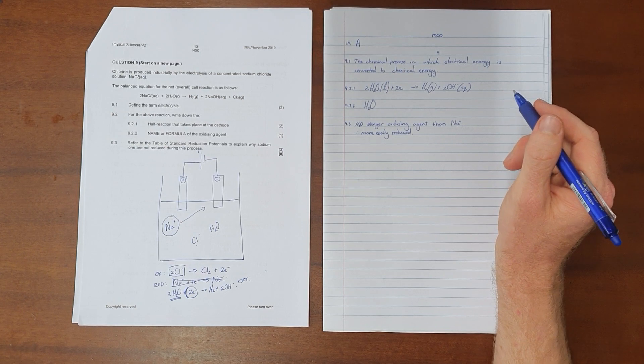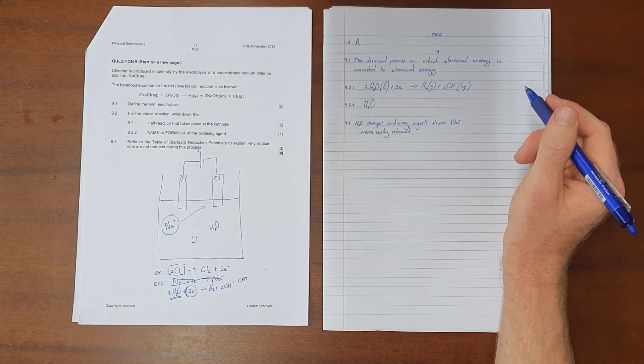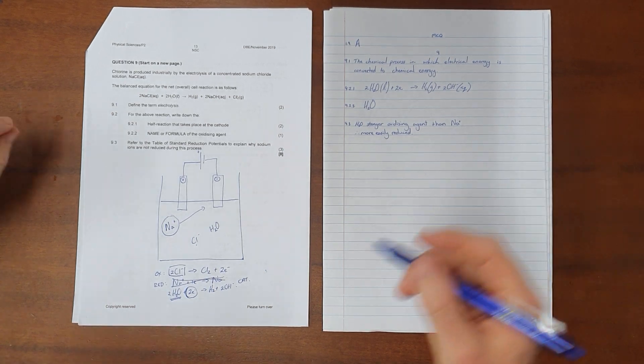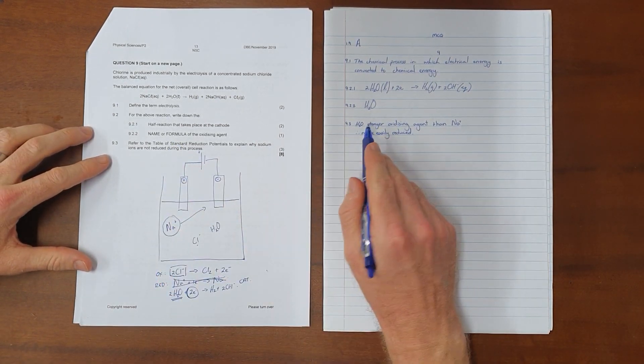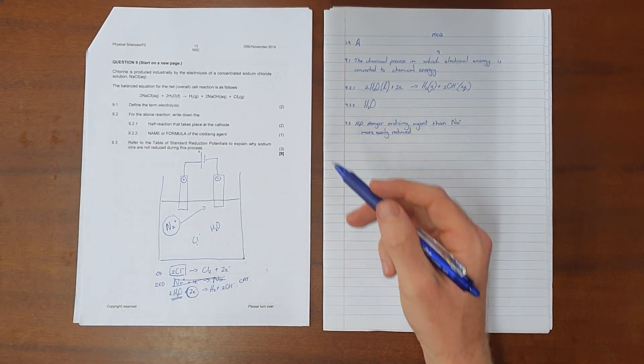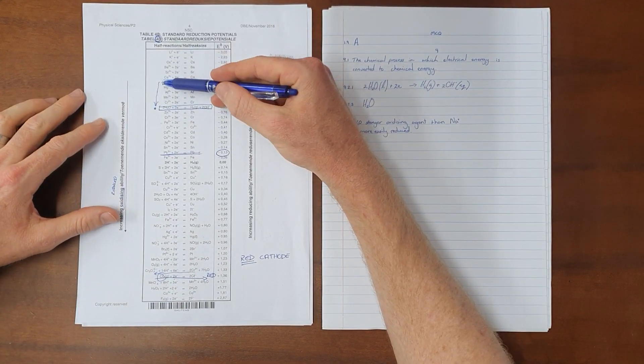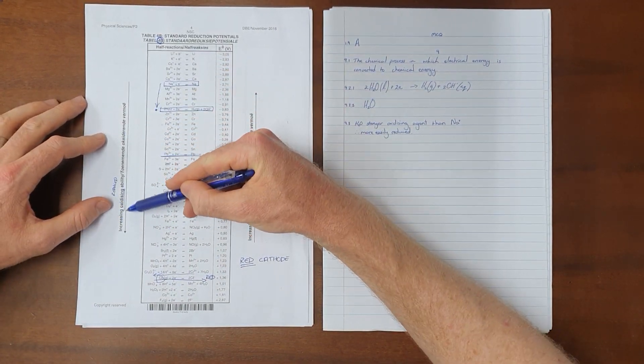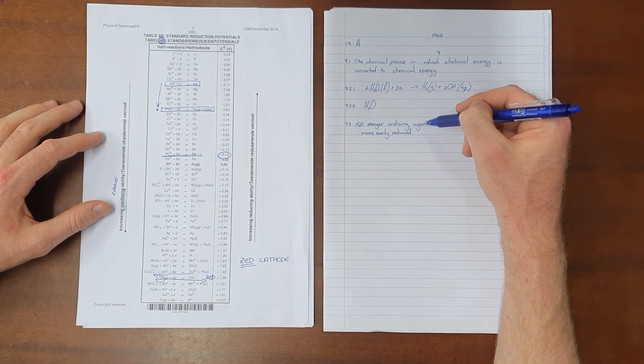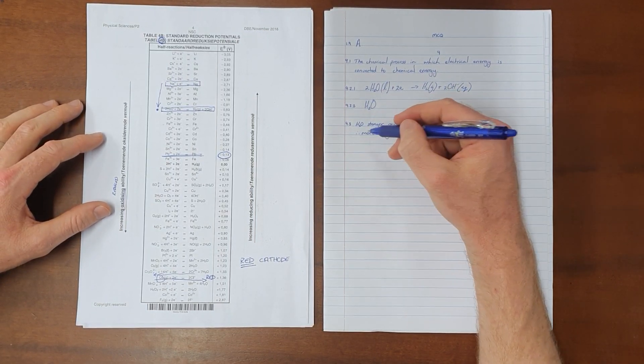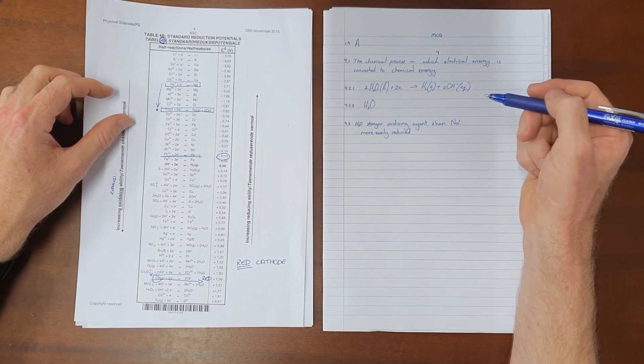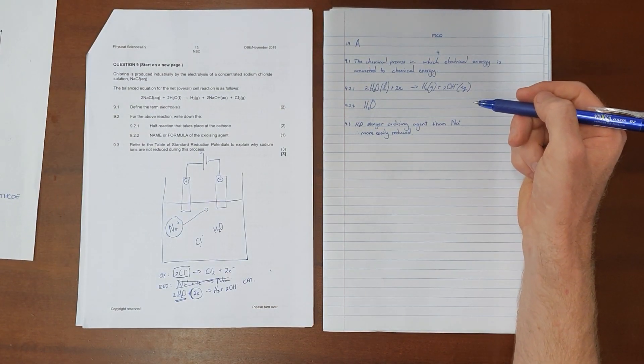Finally, question 9.3: Refer to the table of standard reduction potentials to explain why sodium ions are not reduced during this process. And as we have explained here, because H2O has a stronger oxidizing ability - the water molecule is lower down on the table, therefore its oxidizing ability is higher. Because water has a stronger oxidizing ability than sodium, it will be more easily reduced.